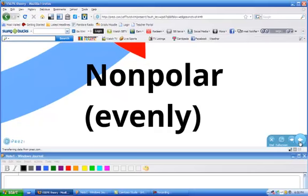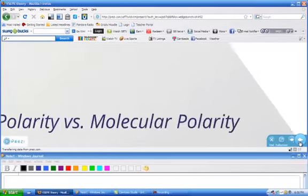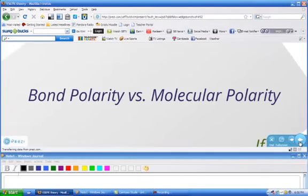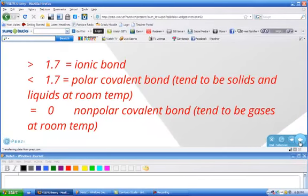So what we can do is we can figure out how well shared those electrons are. You can look at a table of electronegativities, and if you do, we're going to talk about bond polarity first. If you look at the electronegativities of the two atoms in that particular bond, and you see that the difference in those electronegativities is zero, then that's a truly nonpolar covalent bond.